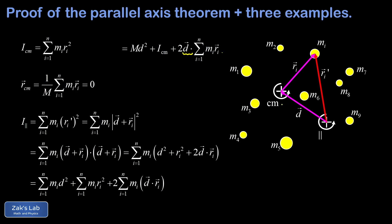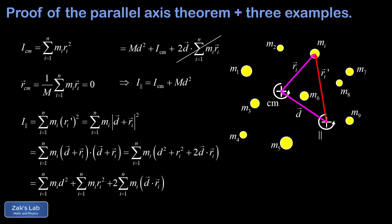Here's where we pull the rabbit out of the hat — but we already showed it to you. The sum of m_i times r_i vector equals the total mass times the center of mass vector. Since these r_i's were measured with respect to the center of mass origin, the center of mass position is zero, and this sum vanishes. We're left with I_parallel equal to I_CM plus total mass M times d squared — and that's our proof of the parallel axis theorem.